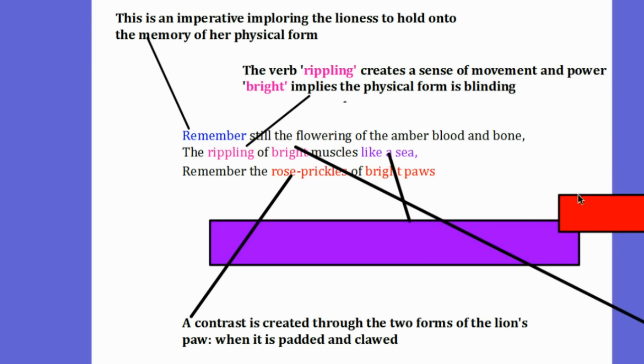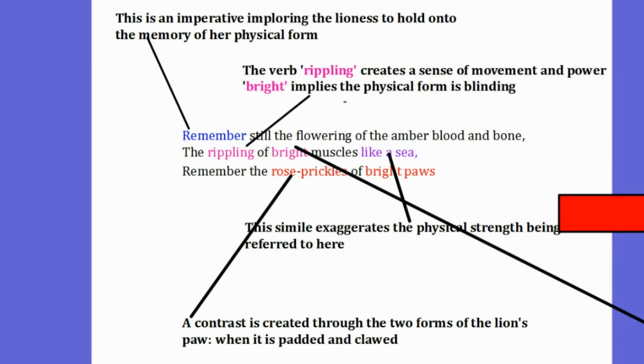the word bright implies the physical form is almost blinding. It's so immense that it's quite blinding. Now the phrase like a sea is of course a simile and it exaggerates the physical strength being referred to here.